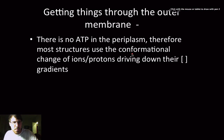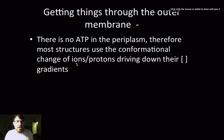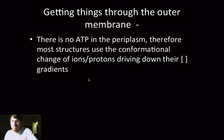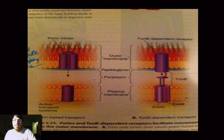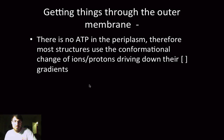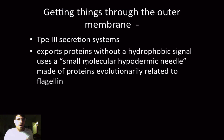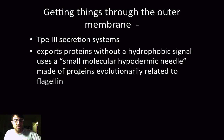Keep in mind that there is no ATP in the periplasm, and therefore most structures use the conformational change of ions or protons driving down their concentration gradients. Because it's such a small space, it's really easy to do that, and it would be metabolically useless to do otherwise. Now let's talk about how we get things out.